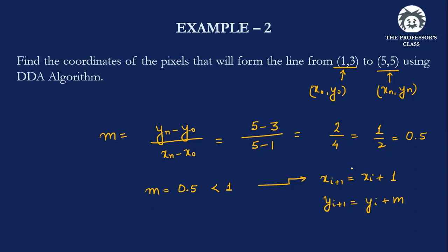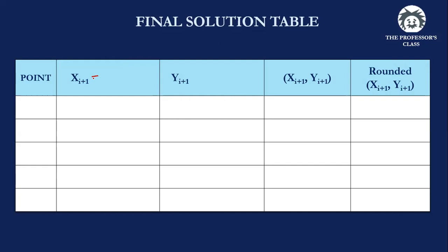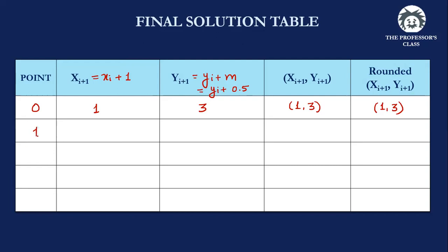Since the slope is less than one, as per the algorithm, x is incremented by one and y is incremented by the slope value (0.5). Setting up the table: x(i+1) = xᵢ + 1 and y(i+1) = yᵢ + m (where m = 0.5). Starting from (1, 3), the first new point is x = 1+1 = 2 and y = 3 + 0.5 = 3.5, giving coordinate (2, 3.5), which rounds off to (2, 4).